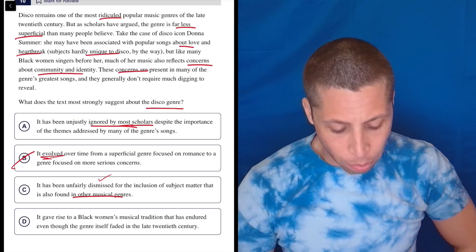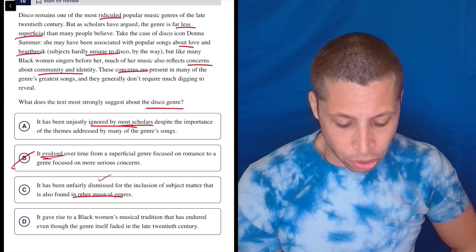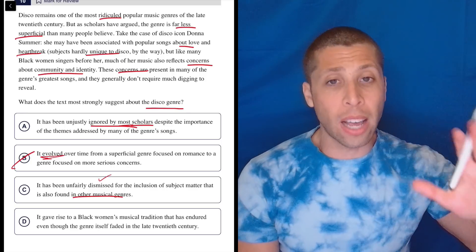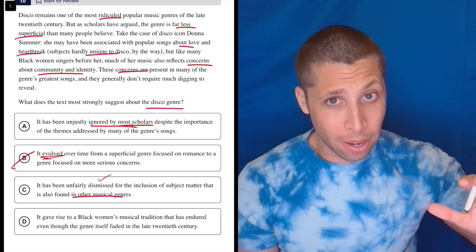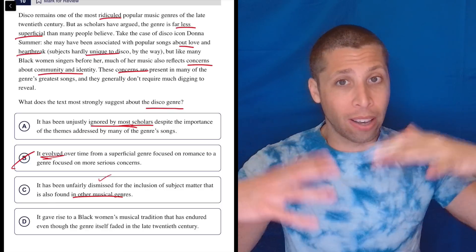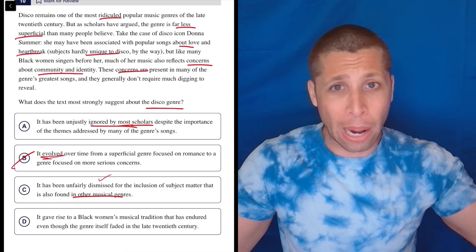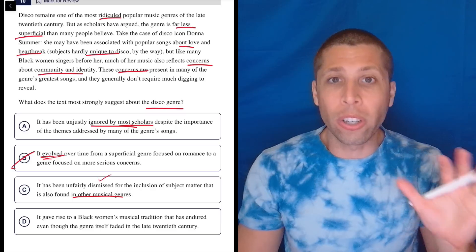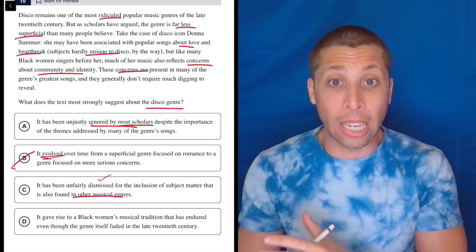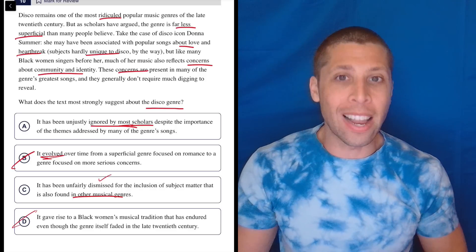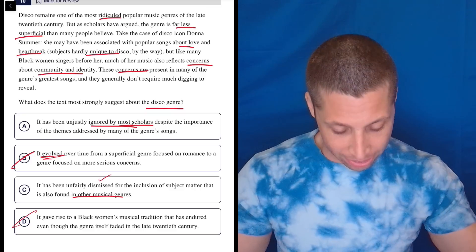D. It gave rise to a black women's musical tradition that has endured, even though the genre itself faded in the late 20th century. No, no, no. They're using Donna Summer as an example. They are not saying that disco is just for black women. That's not right. They're just using her as an example, and they're saying that she does bring in these ideas, but that it's not just about those ideas. It's about all sorts of deep ideas.